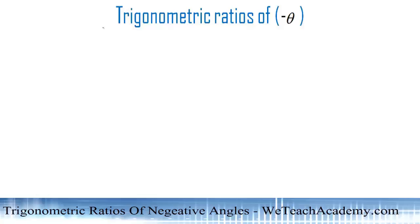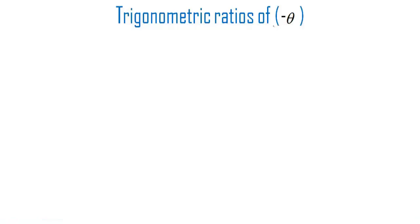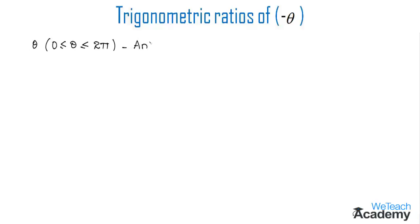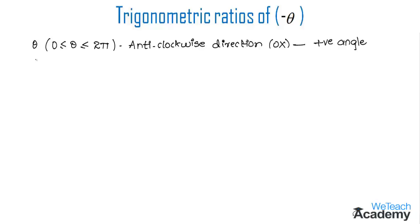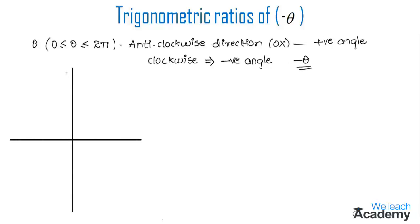Welcome to vtcacademy.com. Today's topic is trigonometric ratios of negative angles. A positive angle is one where theta (0 ≤ θ ≤ 2π) is measured in the anti-clockwise direction starting from the initial side OX. If the same angle theta is measured in the clockwise direction, it is defined as a negative angle and is identified with minus theta.